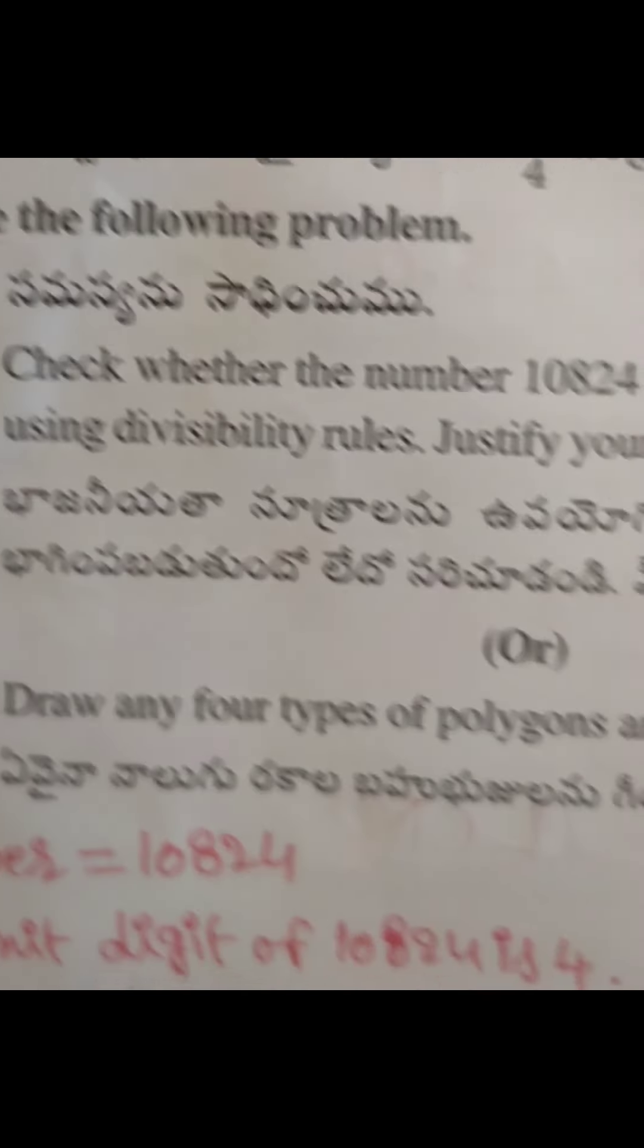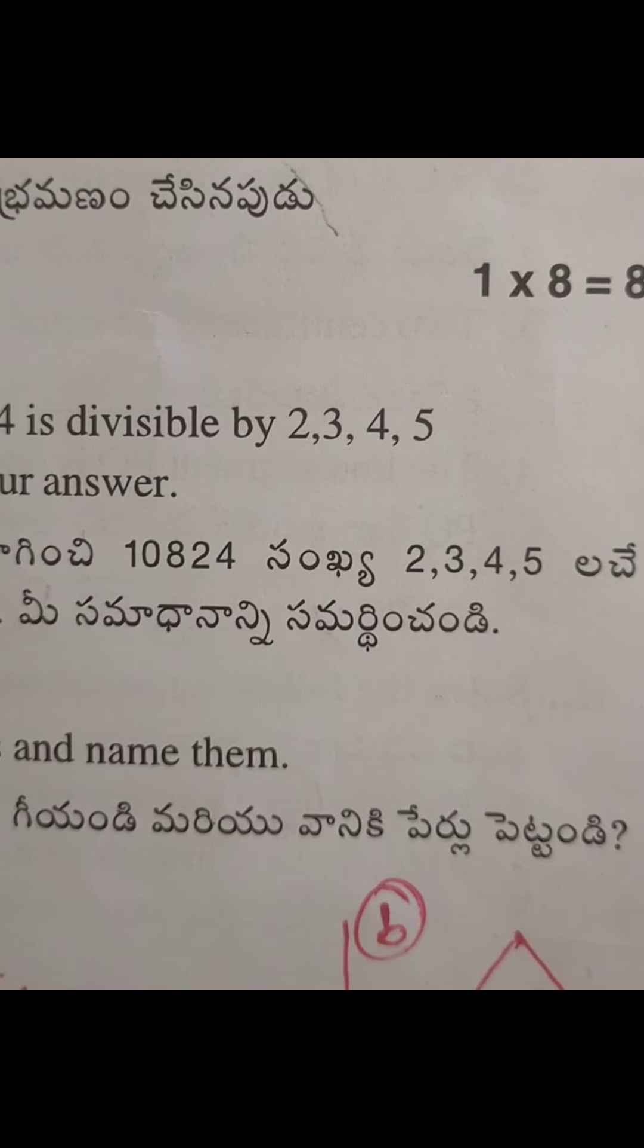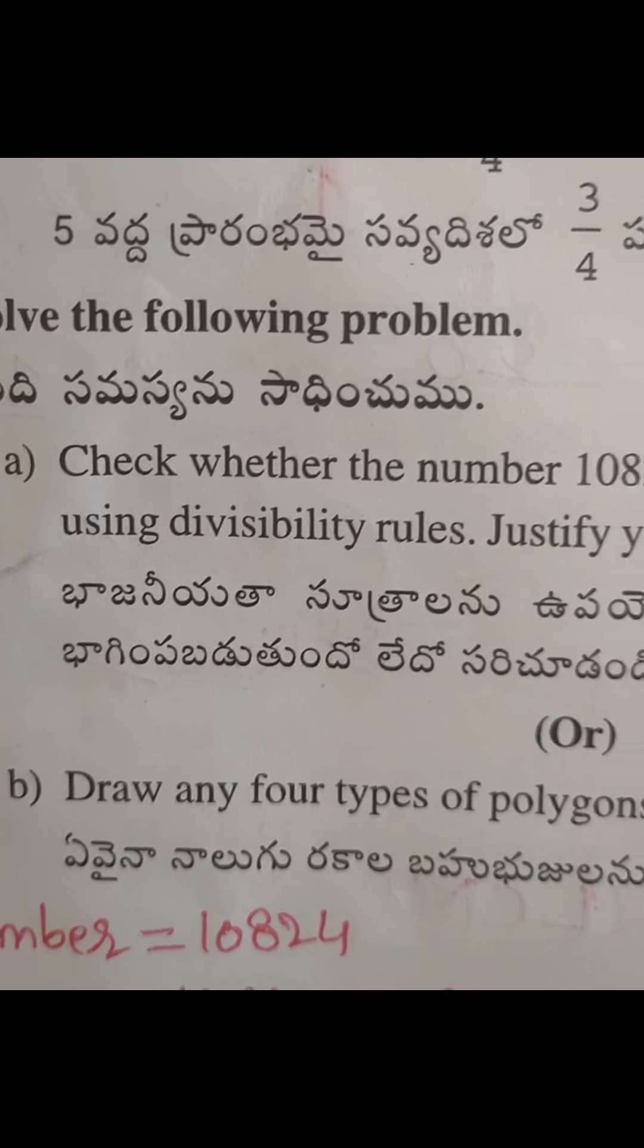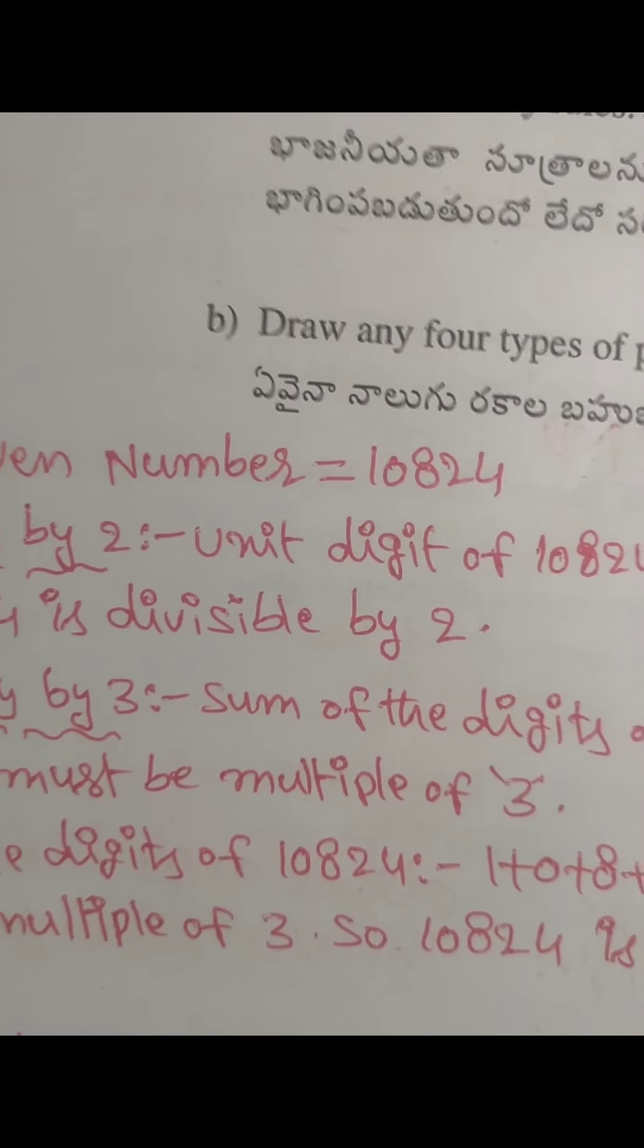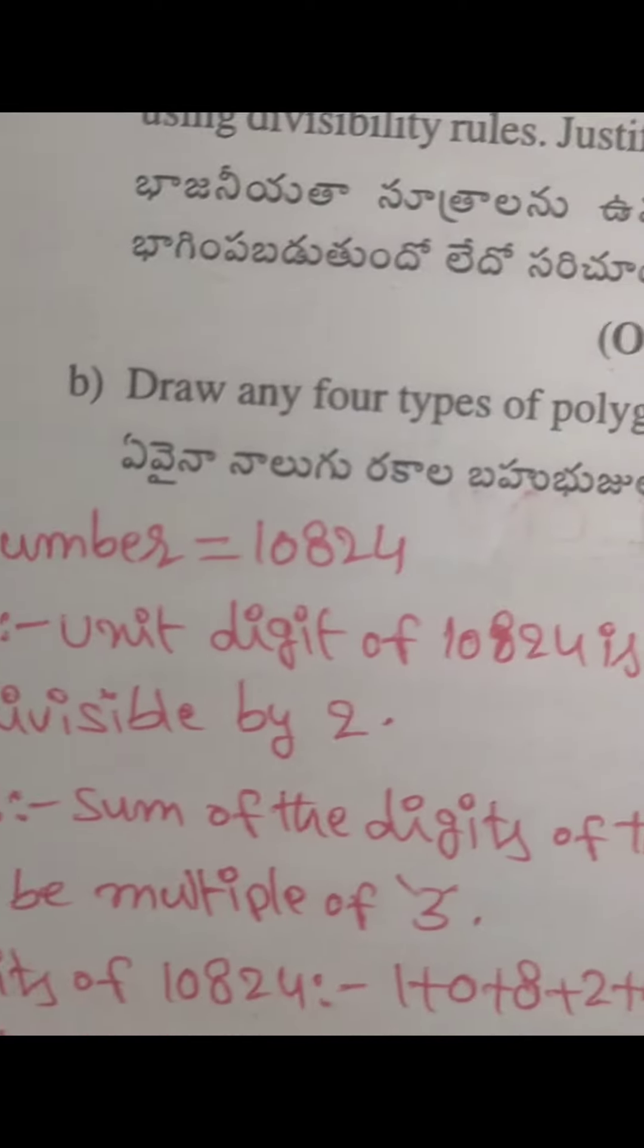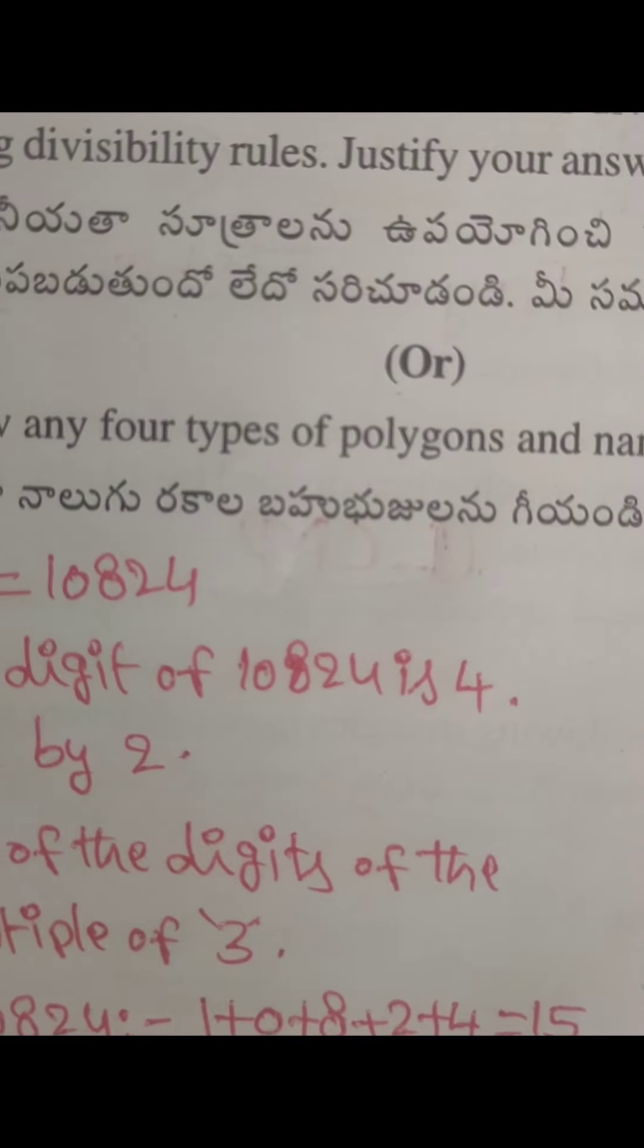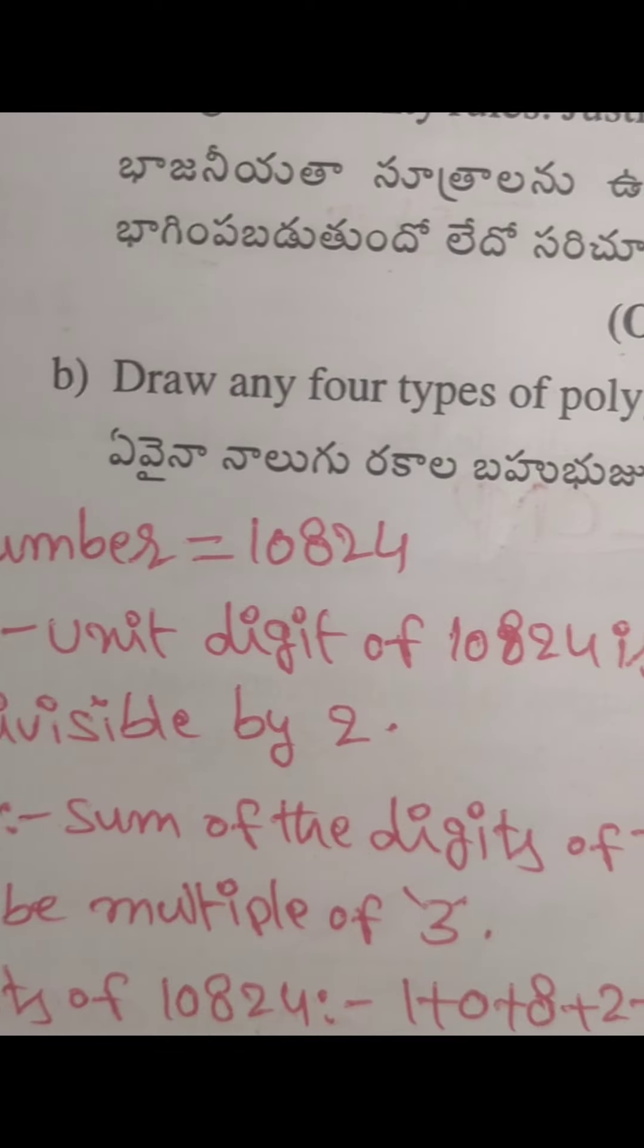Eighth problem: check whether the number 10,824 is divisible by 2, 3, 4, 5 using divisibility rules. Justify your answer. Given number is 10,824. Check divisibility by 2. Unit digit of the given number is 4. So 10,824 is divisible by 2.